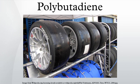High-cis polybutadiene is manufactured using Ziegler-Natta catalysts based on transition metals. Depending on the metal used, the properties vary slightly. Using cobalt gives branched molecules, resulting in a low viscosity material that is easy to use, but its mechanical strength is relatively low. Neodymium gives the most linear structure and a higher percentage of 98% cis. Other less used catalysts include nickel and titanium.